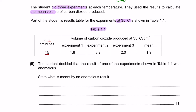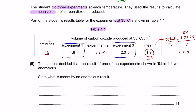The student did 3 experiments at each temperature and calculated the mean volume of CO₂ produced. From table 1.1 at 15 minutes: experiment 1 was 1.8, experiment 2 was 3.2, and experiment 3 was 2.0. The mean shown is 1.9. Calculating with all three gives 2.3, so the mean of 1.9 was calculated using only experiments 1 and 3 — (1.8 + 2.0) ÷ 2 = 1.9.